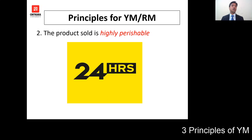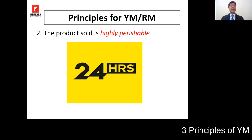Principle number two talks about the product being highly perishable. Rooms are considered highly perishable because the manager only has 24 hours to sell all available rooms. If rooms are not sold within 24 hours, the hotel incurs losses that can only be offset by revenue from the sold rooms. After the night audit is done, revenues for that day are frozen and the next day starts at zero. The 24-hour window is the target for managers to sell all rooms.